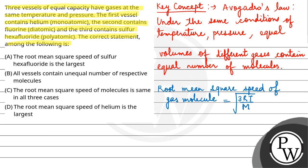If we compare for different gas molecules, then root mean square speed is inversely proportional to M raised to the power 1/2.